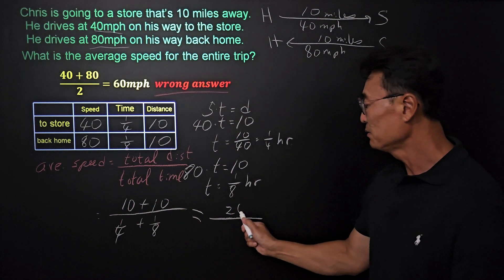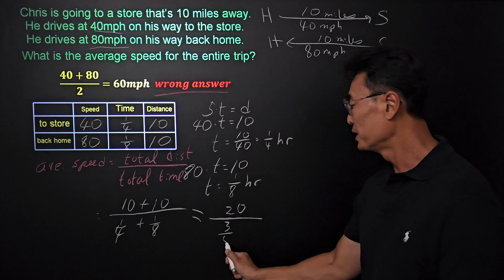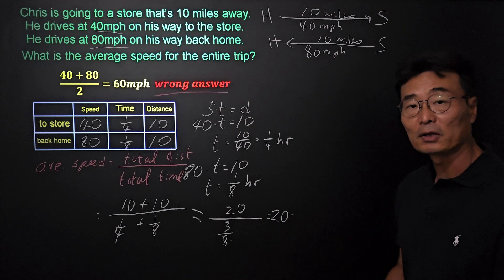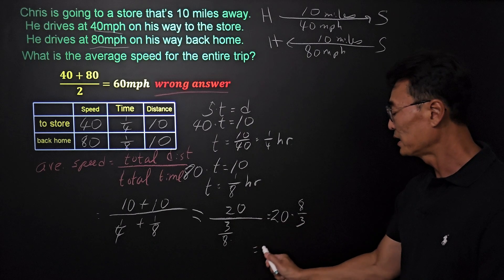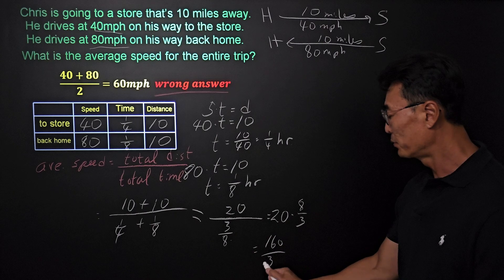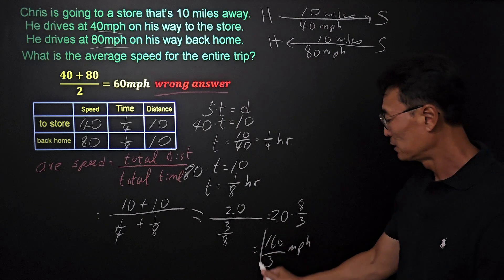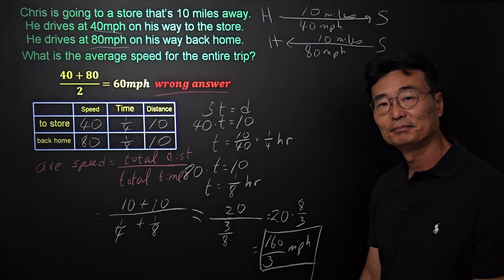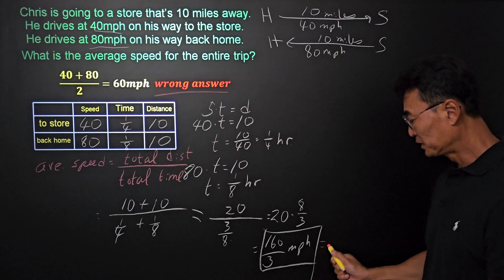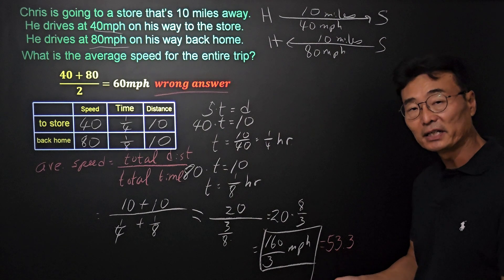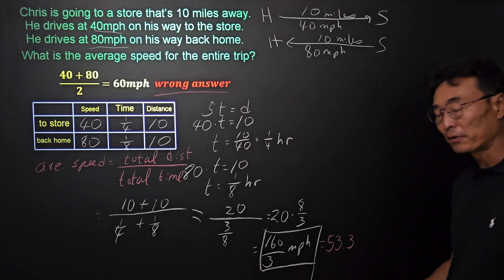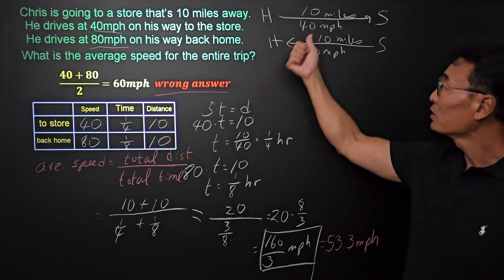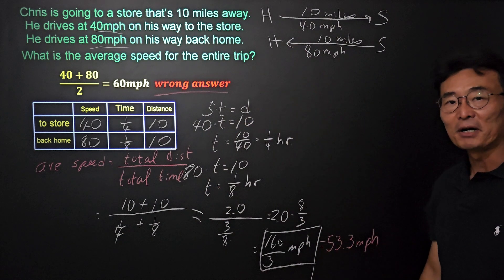Simplifying: 10 plus 10 is 20, and 1/4 plus 1/8 is 3/8. So the average speed is 20 divided by 3/8, which equals 20 times 8/3, giving us 160/3 miles per hour. Converting that, 160/3 is approximately 53.3 repeating, or 53.3 miles per hour rounded to one decimal place. As you can see, 53.3 is less than 60 — it's closer to 40 miles per hour than to 80 miles per hour.